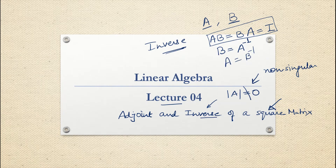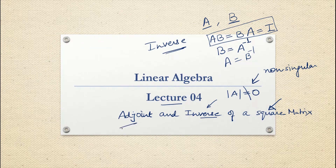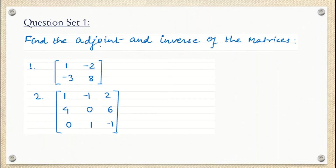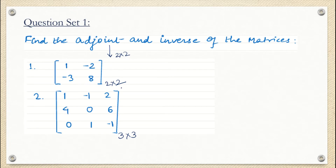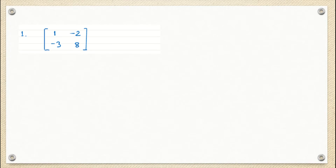This concept of inverse will be very useful in our coming classes. The method we are going to use is the adjoint method. We will first see how to find the adjoint of a 2×2 matrix, then how to find the adjoint and inverse of a 3×3 matrix.